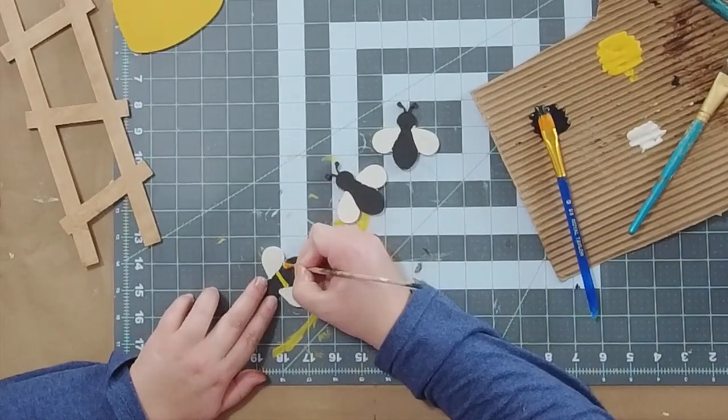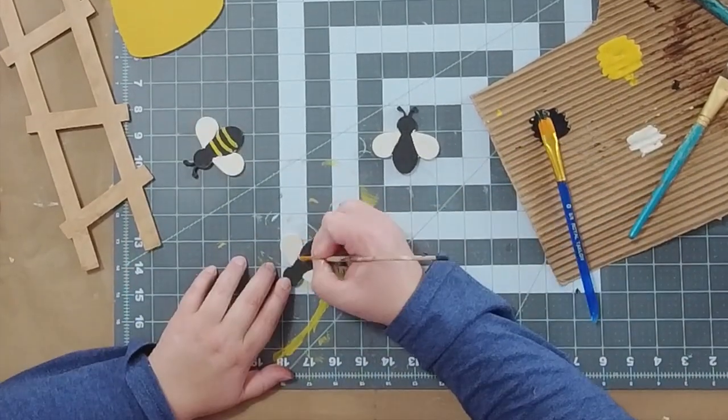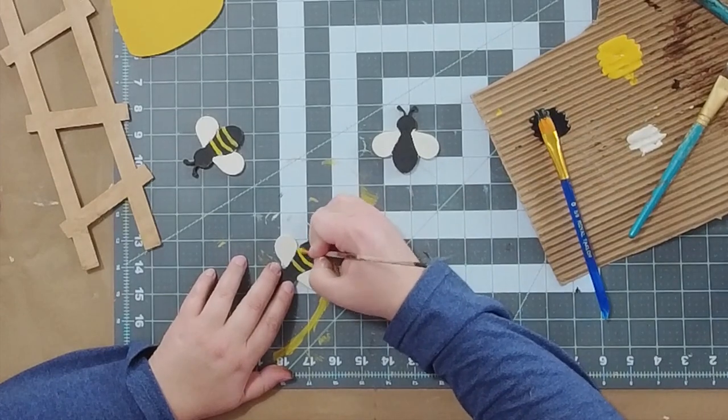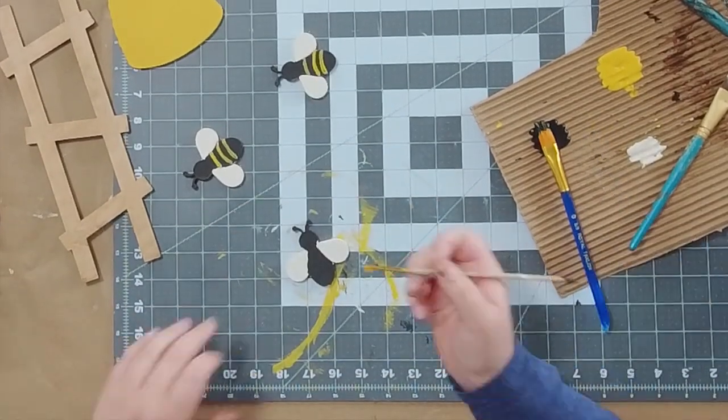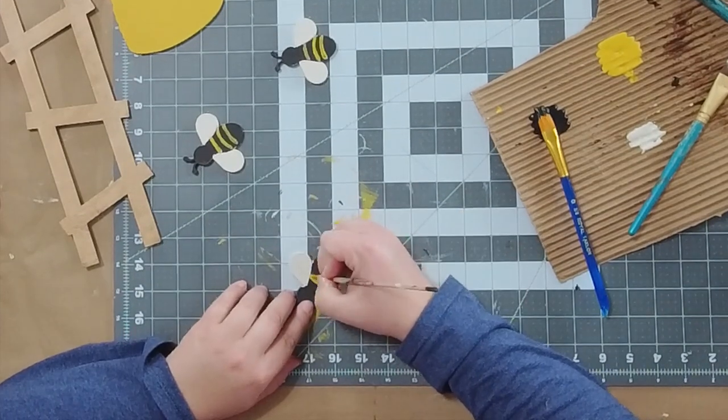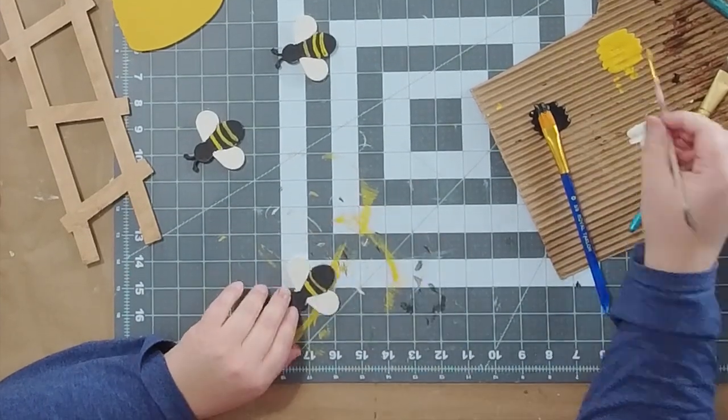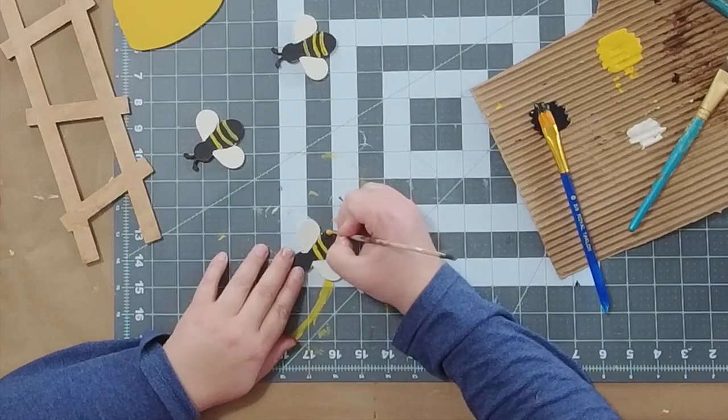Once it's dry, I'm going to use that same King's Gold and add the lines on the bees. There's little engravings for that, so you can kind of follow along with them. We're going to add this stripe on the last bee here.